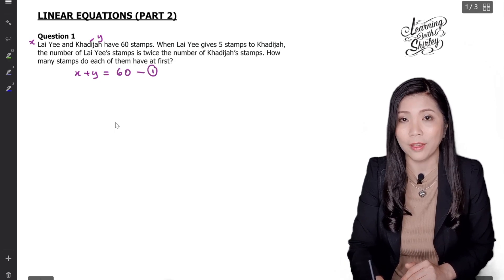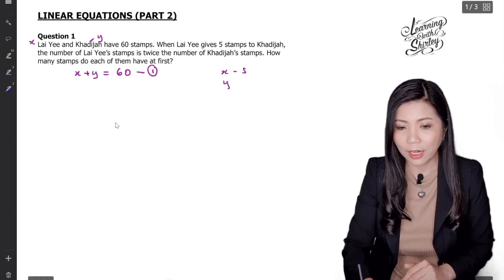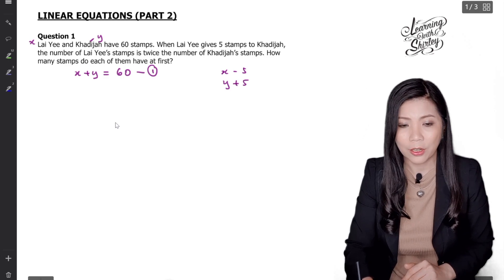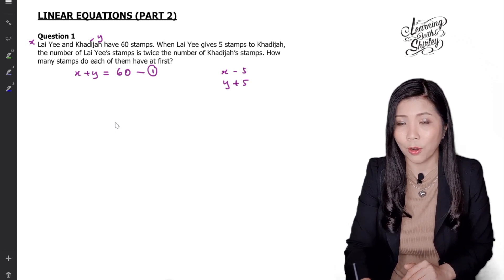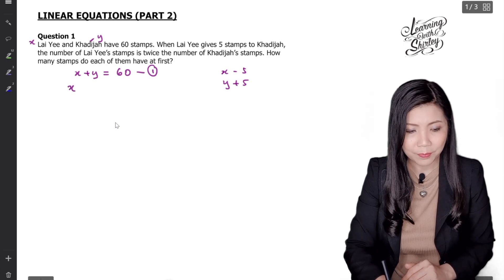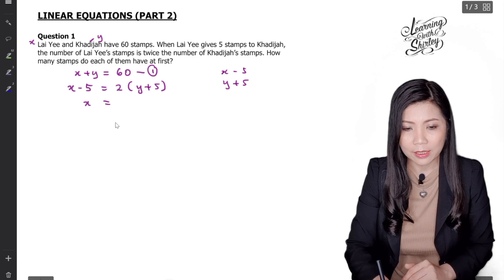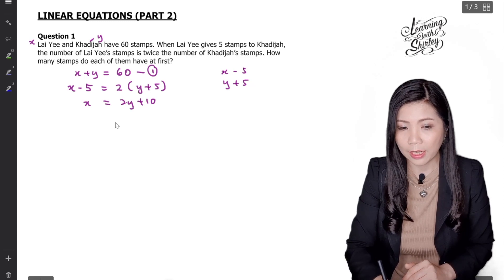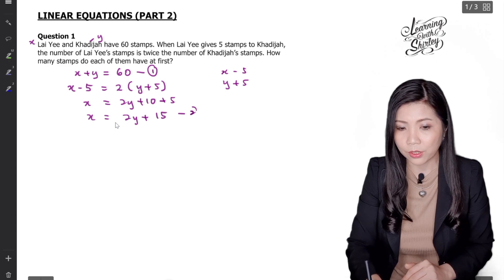This is equation 1. Then when Lahi gives 5 stamps to Katija, it means X minus 5. Katija will get 5 from Lahi. So when Lahi gives 5 stamps to Katija, the number of Lahi stamps is twice the number of Katija stamps, meaning X minus 5 equals 2 times Y plus 5. Let's solve this. So X equals 2Y plus 10, and then shifting the negative 5 to the right it becomes plus 5. So X equals 2Y plus 15. That is equation 2.